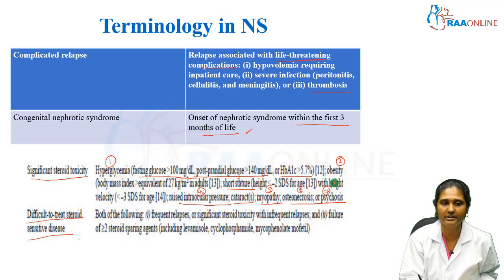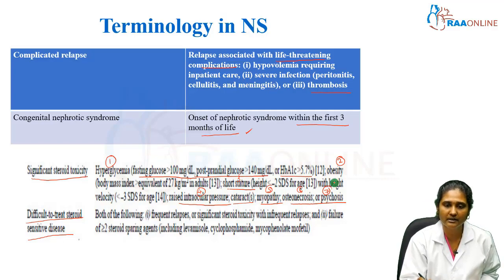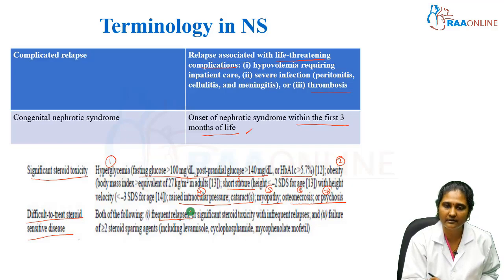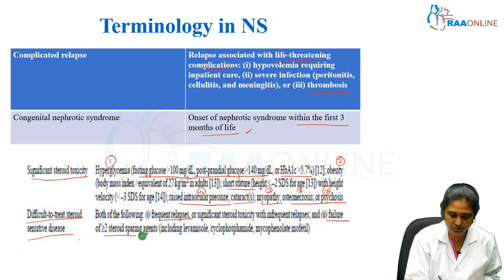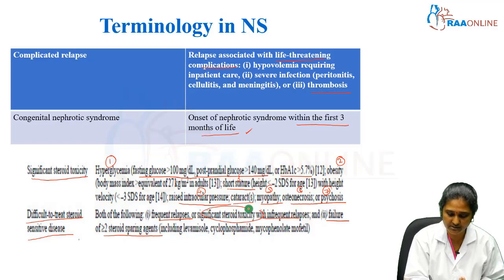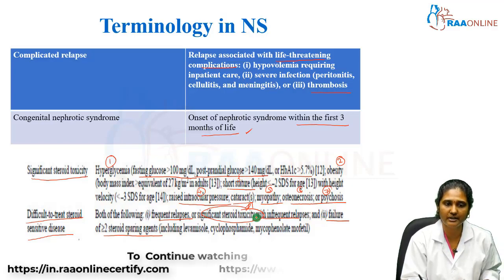Coming to difficult to treat steroid sensitive disease — to satisfy this definition, two criteria should be met. One is frequent relapses — more than two episodes in the first six months of therapy, or more than three episodes in one year. The child is frequently relapsing and also showing failure to more than two steroid sparing agents. If both criteria are fulfilled, those children fall under the category of difficult to treat steroid sensitive disease. Or else, if they have only infrequent relapses but any of the above significant steroid toxicity features are seen along with failure of two steroid sparing agents, they are also considered difficult to treat steroid sensitive disease.